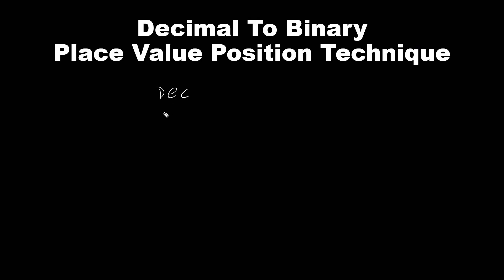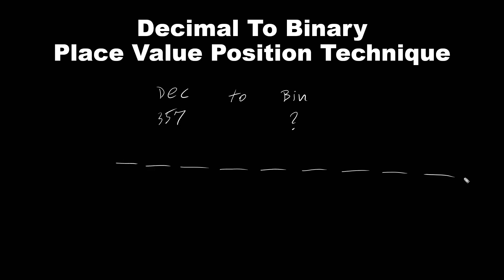Let's say we have a decimal number of 357, and we want to convert it to binary. Let's put these place values. That should be enough for this number, and each place has a position. So starting all the way to the right: position 0, 1, 2, 3, 4, 5, 6, 7, 8.